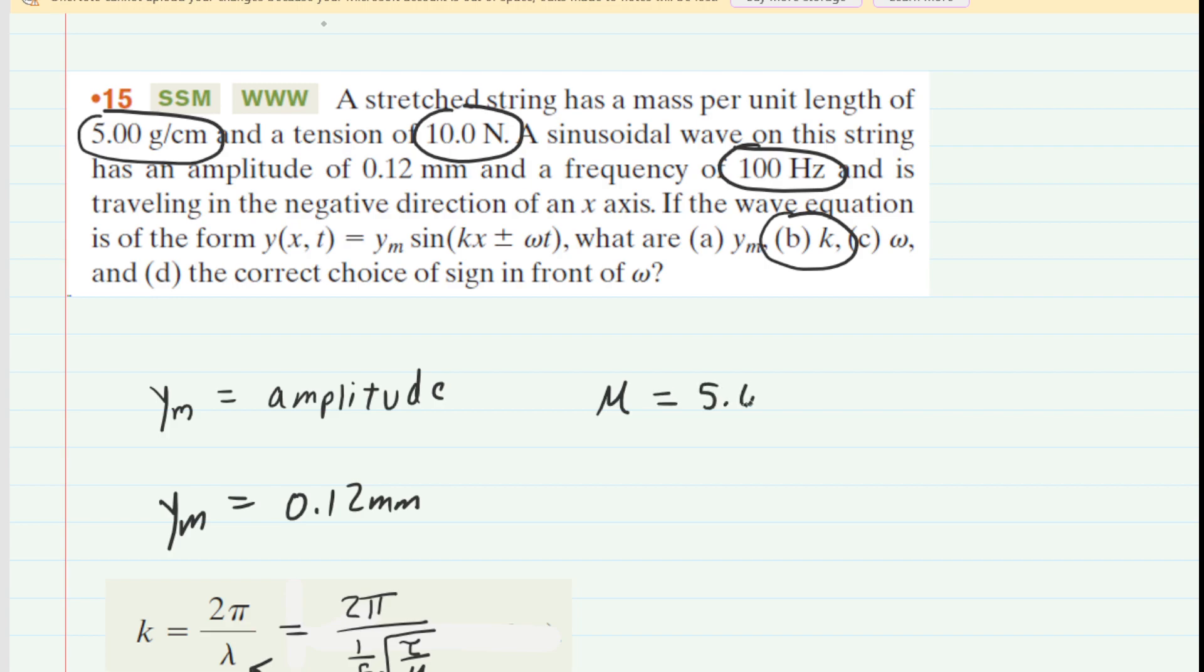And that's a relatively straightforward conversion. We have 5 grams over 1 centimeter. And then, of course, we know that 1 kilogram is equal to 1,000 grams. And then we have 100 centimeters is equivalent to 1 meter.